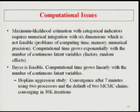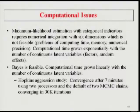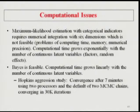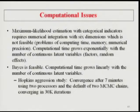The Hopkins aggression study converges after seven minutes using two processors with M-plus default of two MCMC chains converging in 30,000 iterations. Instead of suffering through six-dimensional ML integration — which may not even fit in computer memory for large samples — Bayes gives us results in seven minutes instead of days.